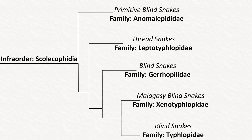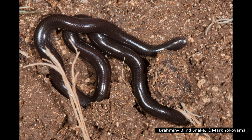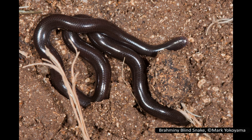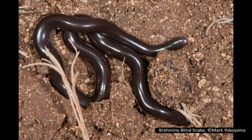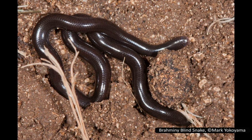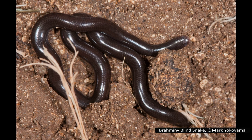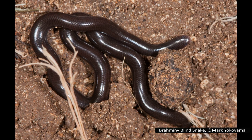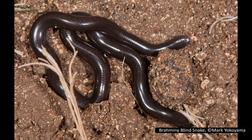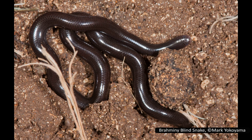The last family in Scolecophidia, Typhlopidae — also known simply as the blind snakes — is by far the largest family in the group, with over 200 named species, and has the largest distribution, being found on every continent except Antarctica. They only have teeth in their upper jaw and cannot dislocate their jaw like more advanced snakes, meaning their prey has to be small enough to fit into their mouths. Like their closest relatives, they eat ants and termites and are also oviparous.